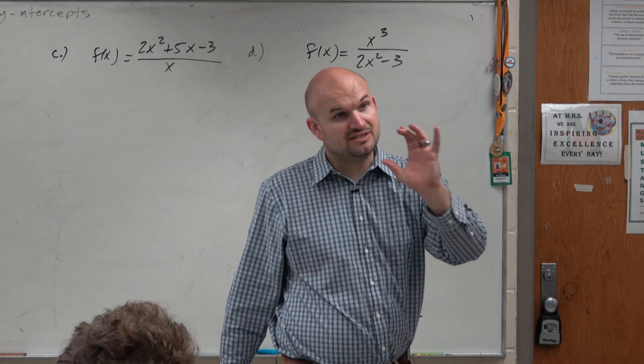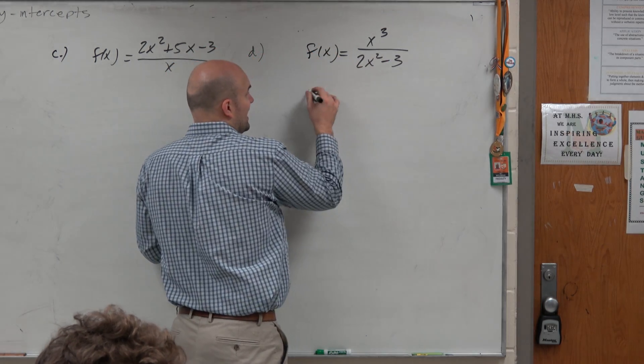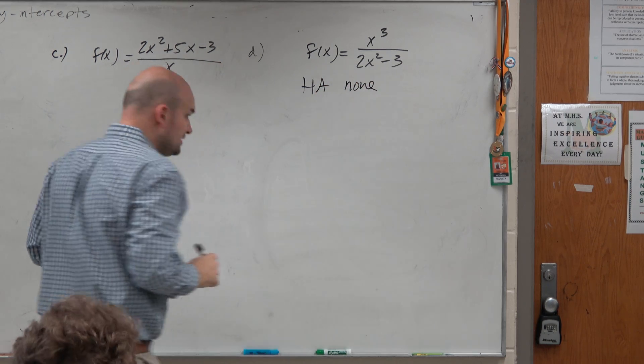But it's important, guys, to recognize these when you're using this horizontal asymptote test. Once I see this, I know there's no horizontal asymptote. None.